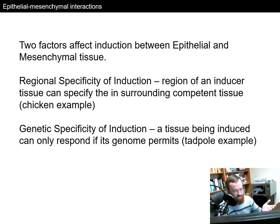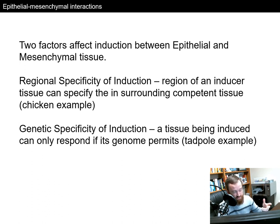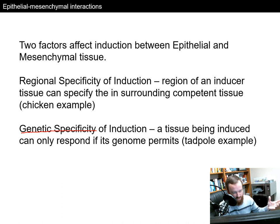Two factors affect induction between the epithelium and mesenchyme. First, regional specificity: the region determines what the tissue will develop into if competent to receive and respond to that message — as in the chicken example where the mesenchyme region told the epithelium how to respond. Second, genetic specificity: the tissue being induced can only respond with its own genes. It can't take genes from a newt and put them into frog cells — it gets the message to become mouth tissue and uses whatever mouth genes it already has.